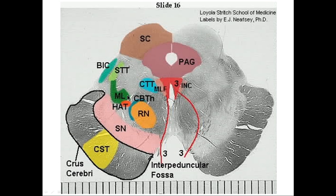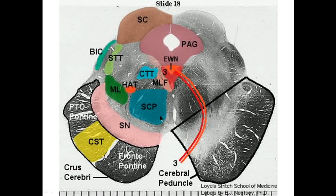Other descending fibers from the parietal, temporal, occipital, and frontal cortices also run here, most going to the pons. But the corticospinal tract runs specifically in the middle portion of the crus cerebri. Here's the substantia nigra. Still in the midbrain, you can see fibers labeled from parietal, temporal, and occipital cortex down to the pons, and from the frontal cortex down to the pons — this is the corticospinal tract.